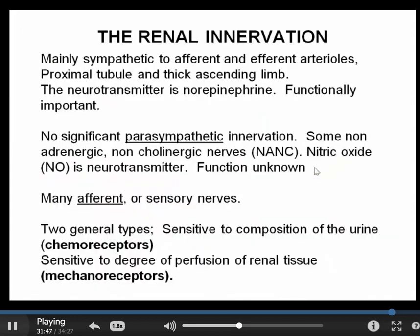Finally, let's spend a minute to consider the renal nerves. The kidneys have a very rich innervation. The efferent innervation is mainly sympathetic — sympathetic nerve fibers go to the afferent and efferent arterioles and also directly to the tubule epithelium, with projections in the proximal tubule and the thick ascending limb. The neurotransmitter is norepinephrine, and these are functionally very important. There is no significant parasympathetic innervation to the kidney. There are a few non-adrenergic, non-cholinergic fibers (NANC), and in some of these nitric oxide is a neurotransmitter, but there are relatively few of them.